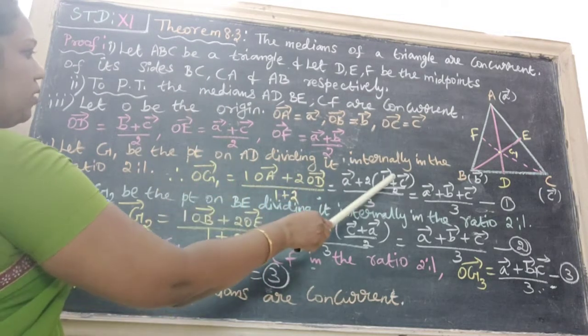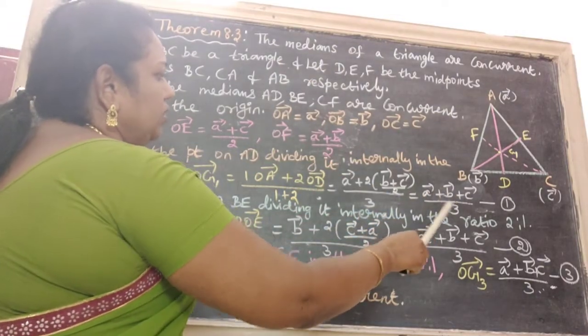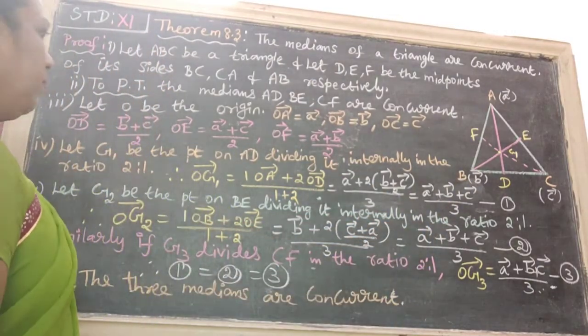Substituting, 2 cancels. We get A vector plus B vector plus C vector divided by 3. That is equation number 1.